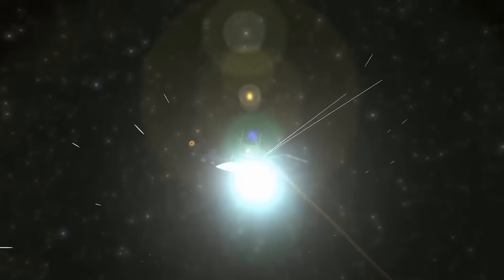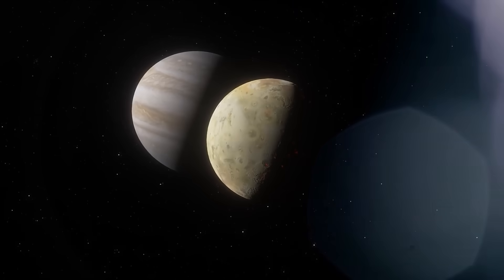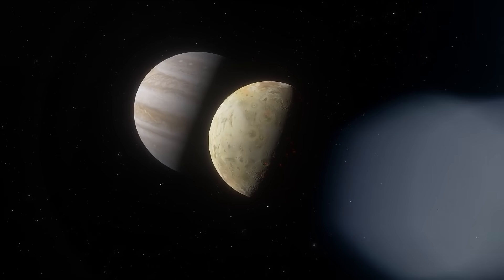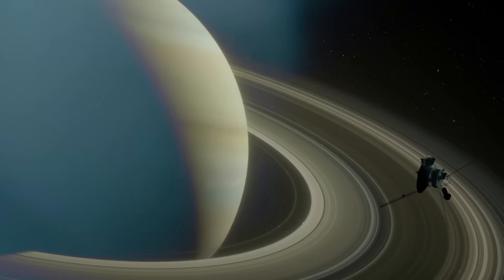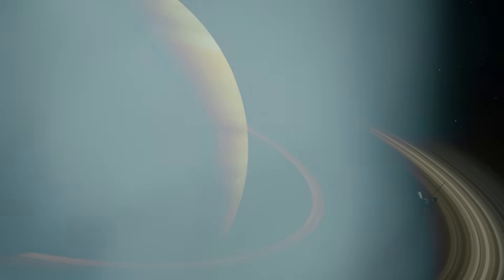One of the first things that puzzled NASA wasn't what was received, but when. Voyager's signal, traveling at the speed of light, typically takes over 22 hours to reach Earth. But this time, there was a strange delay, a gap of several minutes.